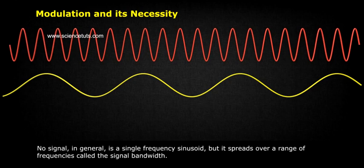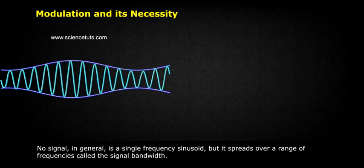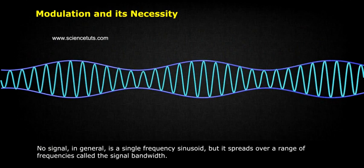No signal in general is a single frequency sinusoid, but it spreads over a range of frequencies called the signal bandwidth.